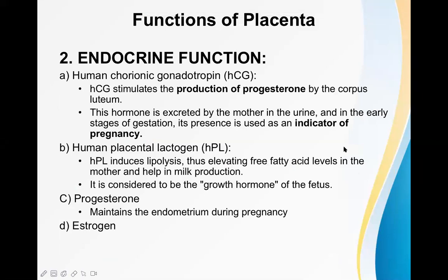The second important function of the placenta is the endocrine function. The four important hormones produced by the placenta are: human chorionic gonadotropin (HCG), human placental lactogen (HPL), progesterone, and estrogen. Relaxin can also be considered an additional placental hormone with an important role near the time of labor.